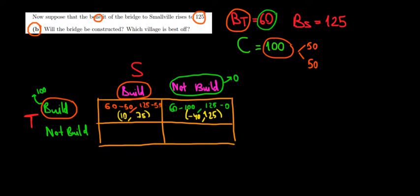Now we go to the next cell. Same logic over here. What would happen if Tiny Town does not build, but Smallville is going to build? In this case, the costs are reversed. Tiny Town has zero cost and Smallville will incur the entire cost of 100.